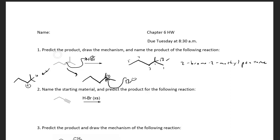We predicted the product, drew the mechanism, and named the product. My approach: draw the mechanism first to see what's happening with proton transfers and whether rearrangement is possible. In this case rearrangement doesn't help — we already had a tertiary carbocation, so rearrangement wouldn't stabilize anything further. Then look at the nucleophile, whether it attacks from front or back, and finally name the product.